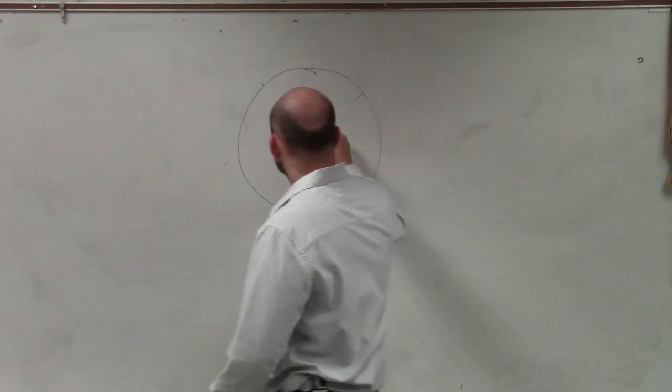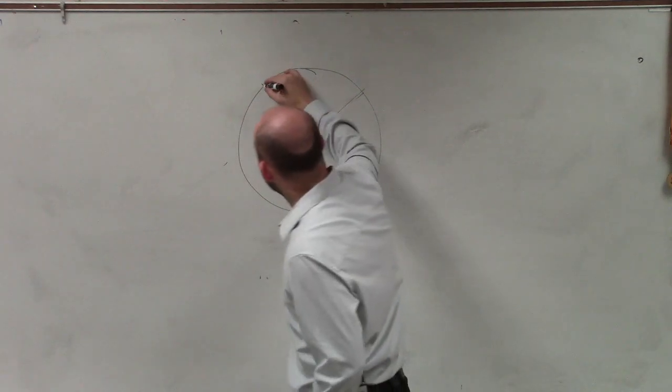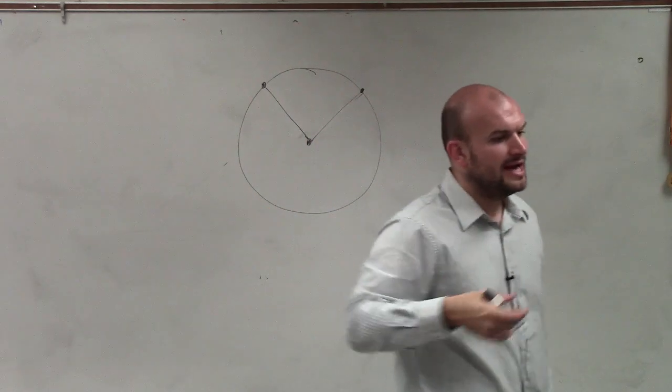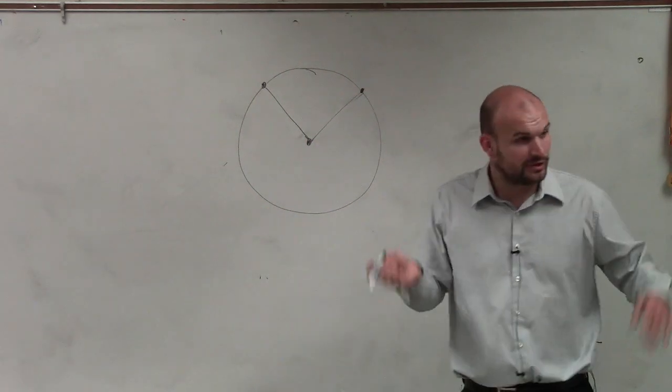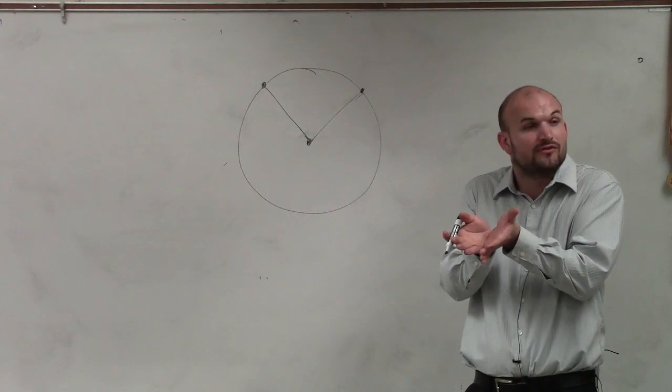And we've also previously talked about angles. So I'm going to draw an angle where the endpoints are points that are on the circle. And the vertex, if you guys remember, is where the two rays came together, what we call the vertex.